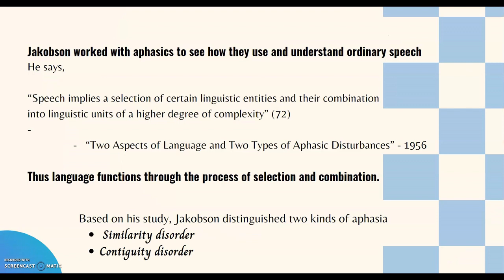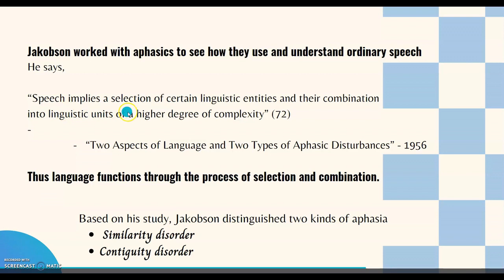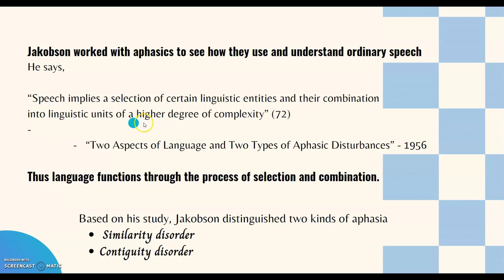To develop his theory of language, Jakobson worked with aphasics — people who have speech difficulties — to see how they use and understand ordinary speech. In his work published in 1956, titled 'Two Aspects of Language and Two Types of Aphasic Disturbances,' he states that speech implies a selection of certain linguistic entities and their combination into linguistic units of higher degree of complexity. Based on this study, he distinguished two kinds of aphasia: the similarity disorder and the contiguity disorder.